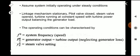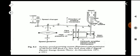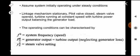For modeling, we assume the system is initially operating under steady state conditions — the linkage mechanism is stationary, the pilot valve is closed, and the steam valve is opened by a certain magnitude, so the turbine is running at a constant speed with turbine power output balancing the generator load. The operating conditions are: f0 as the system frequency, p0 as the generator output equal to turbine output, and ye0 as the steam valve setting.